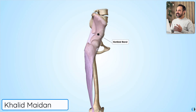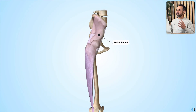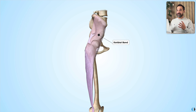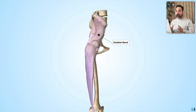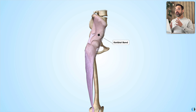Let's dive into the iliotibial band, one of the most controversial structures in physiotherapy and in anatomy. The first thing to mention about the ITB is that it is not a muscle. It is not a contractile structure. It does not contain any contractile fibres.